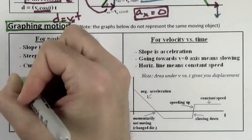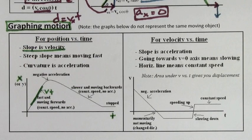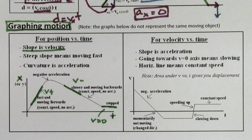Graphing motion can be hard, but on a position versus time graph, the slope is the velocity. That means positive slope, positive velocity, you're moving forward. Negative slope, negative velocity, you're moving backwards. And if there's zero slope, you aren't moving because the velocity is zero.